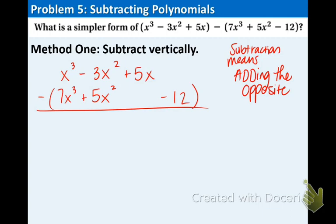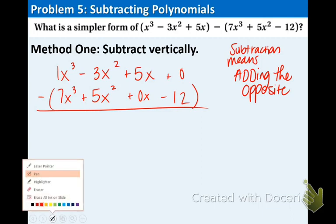First thing I see that this x to the third up top does not have a coefficient so put a 1 there. Now, if it helps you you can put zeros in these spots that are blank or maybe you just know that that's already a zero. It's up to you. And now we're just going to subtract down. I'm going to use the adding the opposite method just in case you like that.